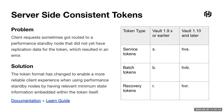When a performance standby node receives a request, it can decide on the fly without talking to anyone else whether it needs to forward the request to an active node — for example, if it's behind in consuming the Raft log. This enables higher performance since standby nodes can handle requests themselves without forwarding them. We've also updated the token prefix: service tokens now have the prefix HVS dot instead of S dot. If you're doing scripting or handling tokens in some way, take note of this change.